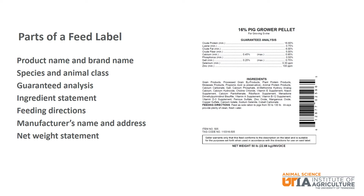Formulating a ration for swine can be very complex. A few of the factors to consider include choosing between many different feedstuffs, expected feed intake, palatability or how readily the animal will eat the feed, nutrient availability, and toxicity concerns. Because of this, it is very common for swine producers to purchase pre-mixed feeds. These feeds are specially designed to meet the needs of a specific class of swine.